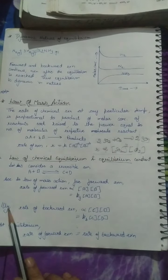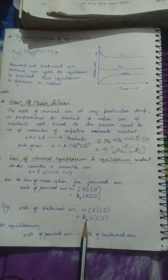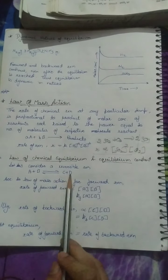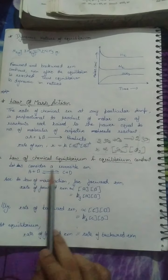Similarly, you have the rate of reaction for the backward reaction. This will be Kb, that means the constant for the backward reaction. The backward reaction involves C and D as reactants.